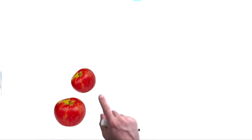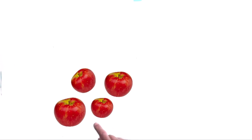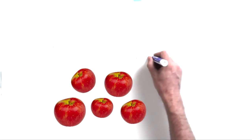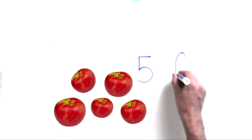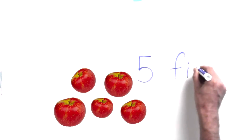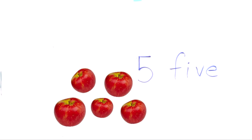Now let's do five. I'm feeling kind of hungry, so let's do some apples. Let's put five apples on the screen. Now let's count them — touch them with your finger: one, two, three, four, and five. Here's how we write the number five. Now let's write the word five — F-I-V-E. There's the word five. You need to know how to do both of them.